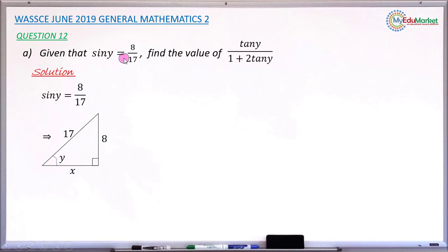And you now use this value sin y equals 8 over 17. Remember, sine is opposite divided by the hypotenuse. So the opposite side to this angle y would now be marked 8 units, and the hypotenuse, the longest side of this right angle triangle, will now take this 17 units.